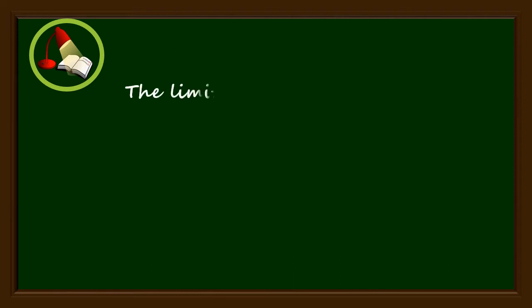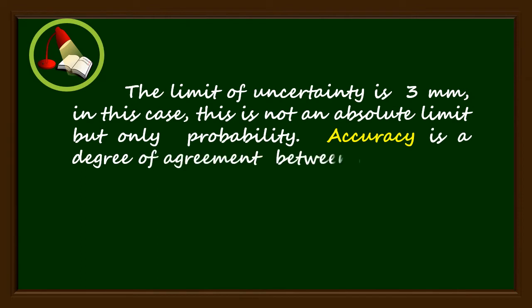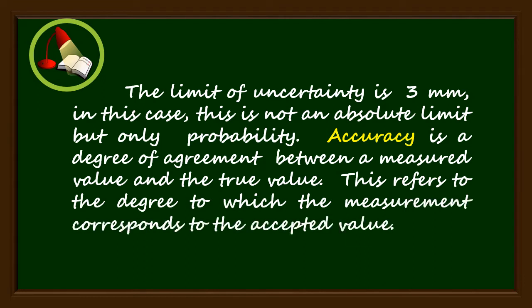The limit of uncertainty is 3 millimeters. In this case, this is not an absolute limit but only probability. Accuracy is a degree of agreement between a measured value and the true value. This refers to the degree to which the measurement corresponds to the accepted value.